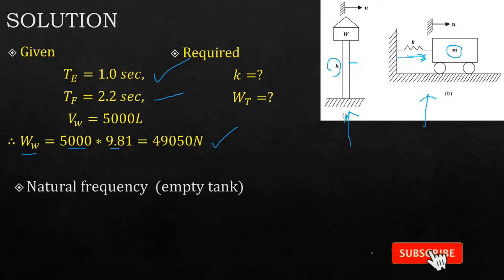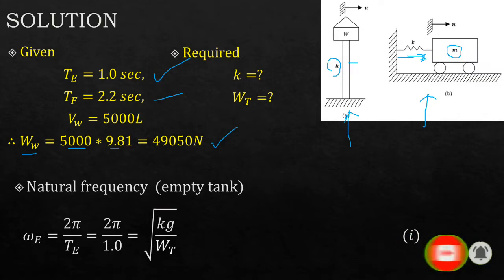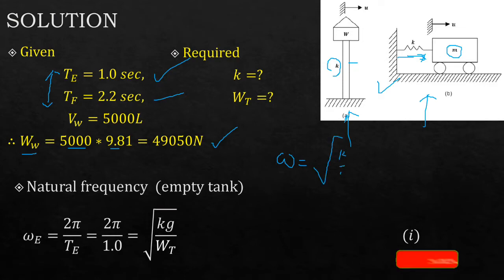So the natural frequency when the tank is empty. The angular frequency is equals to 2π over the period. The formula that we want to use depends on what we have been given. That's why we start by visualizing and listing down what you have been given, listing down the parameters that we are given so that we know where we can start from. The common formula that we know is omega equals the root of k over m.